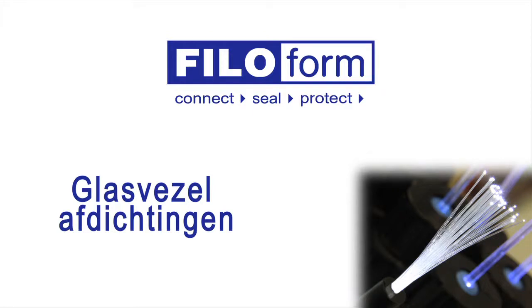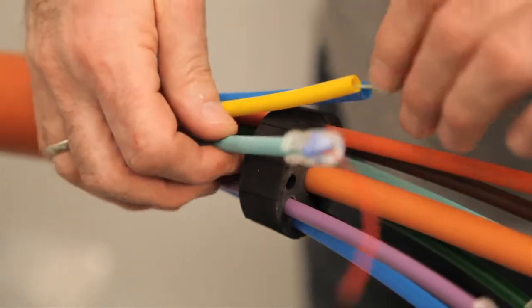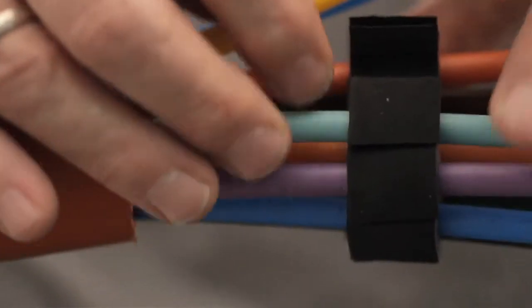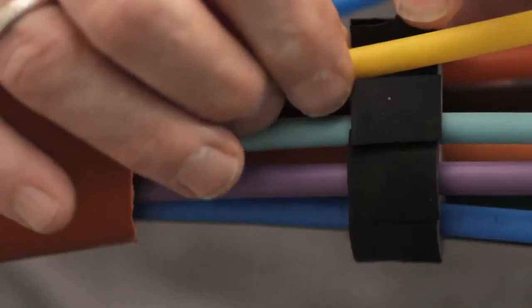Filiform seals for fiber optical networks provide effective sealing of your fiber optical network. The smart design allows easy retrofitting after blowing of the cable into the duct.